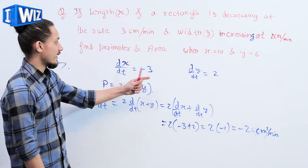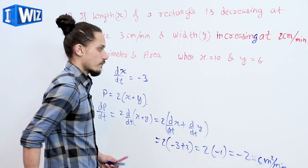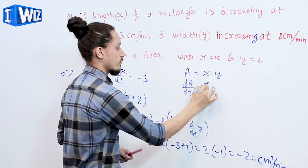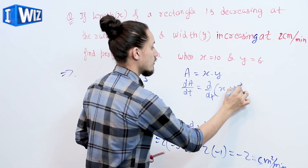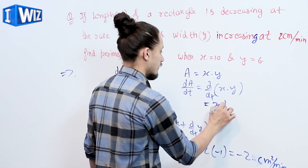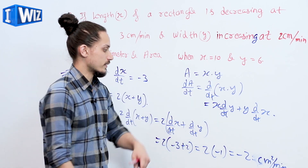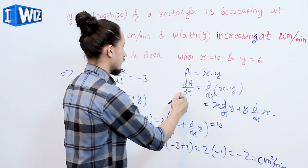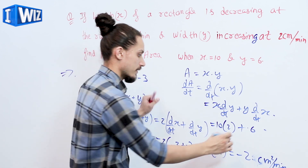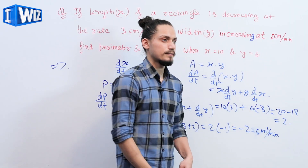Now for the rate of change of area: area of a rectangle equals length times breadth, so d/dt of A equals d/dt of (x times y). By the product rule: x times d/dt(y) plus y times d/dt(x). With x equals 10, dy/dt equals 2, y equals 6, and dx/dt equals minus 3, we get 20 minus 18, which equals 2 centimeters squared per minute.